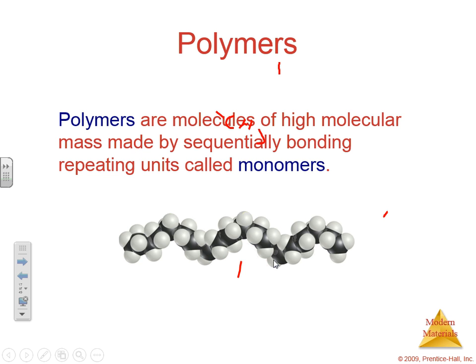Next up, polymers. Polymers are molecules of high molecular mass made by sequentially bonding repeating units called monomers. Those repeating chains are usually just chains of carbon — the monomers might be simple carbon bonds such as CH3. If you continually repeat bonding those monomers, you get polymers. Monomer is one, polymer is many, and the more bonds you get, the higher your mass gets.